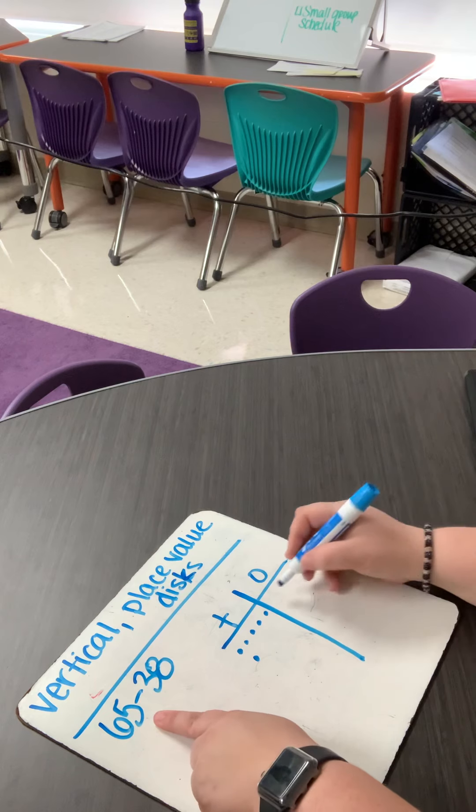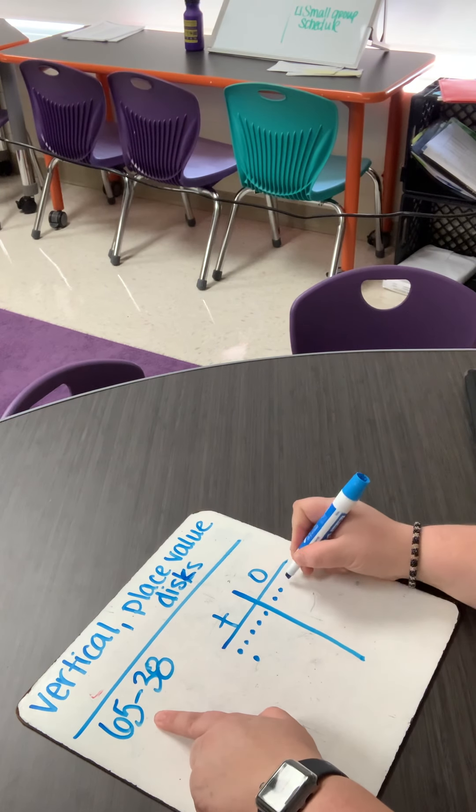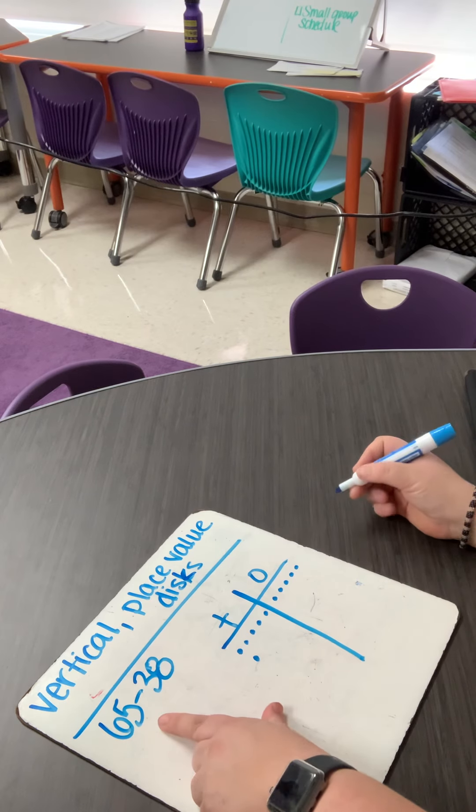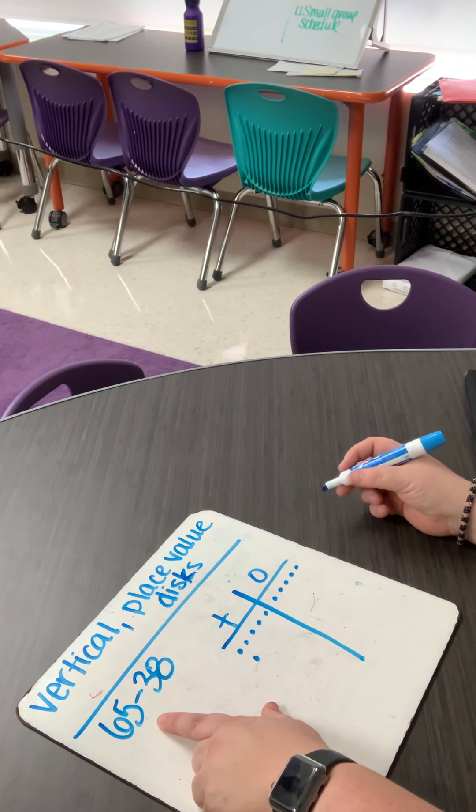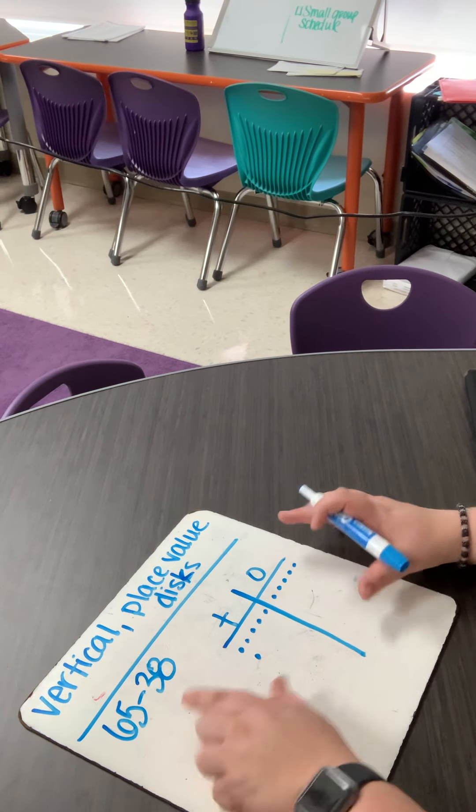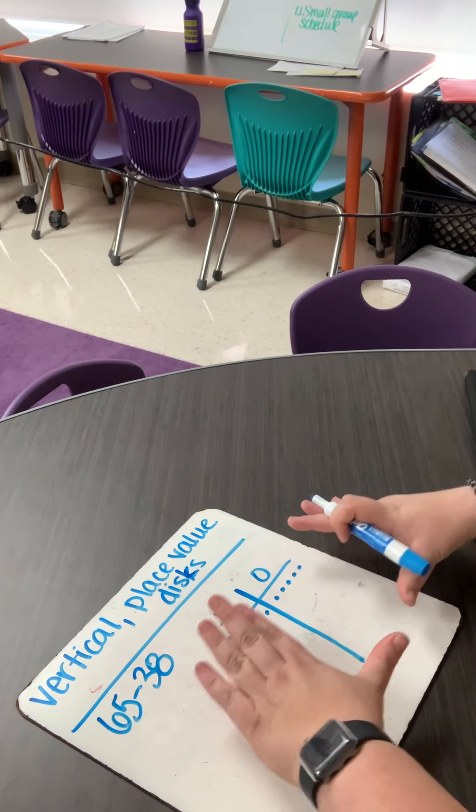Then I have five ones. One, two, three, four, five. Sometimes it's really easy for us to see this before we just start adding and subtracting. That's the reason why we draw out our place value chart.